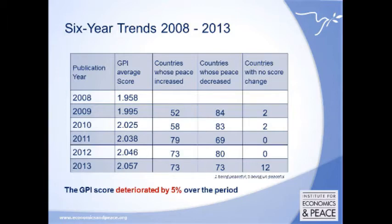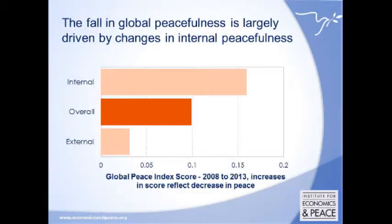By understanding drivers, we can begin to understand the potential drivers of resilience. Looking at six-year trends, there has been a 5% reduction in the level of peacefulness — the GPI score has gone down. Many countries have improved, but deteriorations have outweighed the gains. One main reason for the overall fall is the decline in internal indicators: measures of safety and security, homicide, violent crime, incarceration levels, and police numbers have really fallen in the last six years globally.